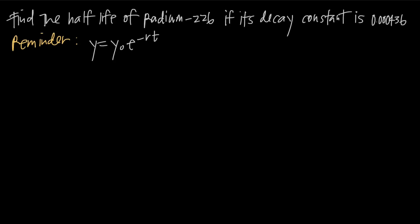In this video, we're talking about half-life, and in this particular problem, we've been asked to find the half-life of radium-226 if its decay constant is 0.000436. The specific values — radium-226 or the particular decay constant — aren't really important. The important part is the process we're going to use to find half-life.